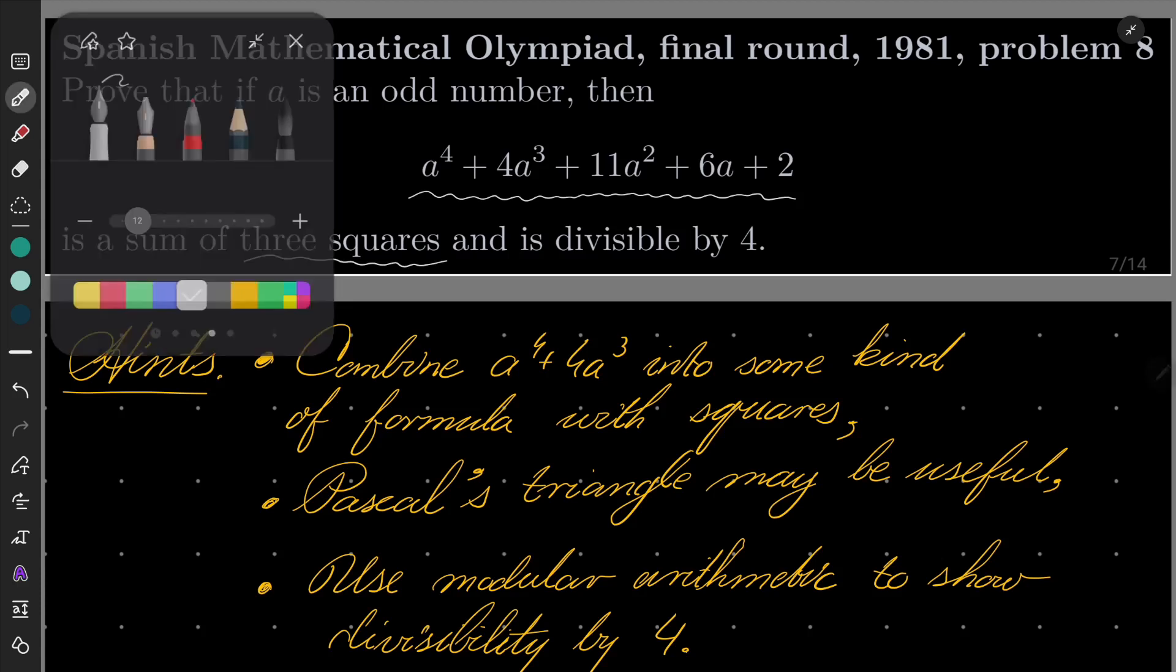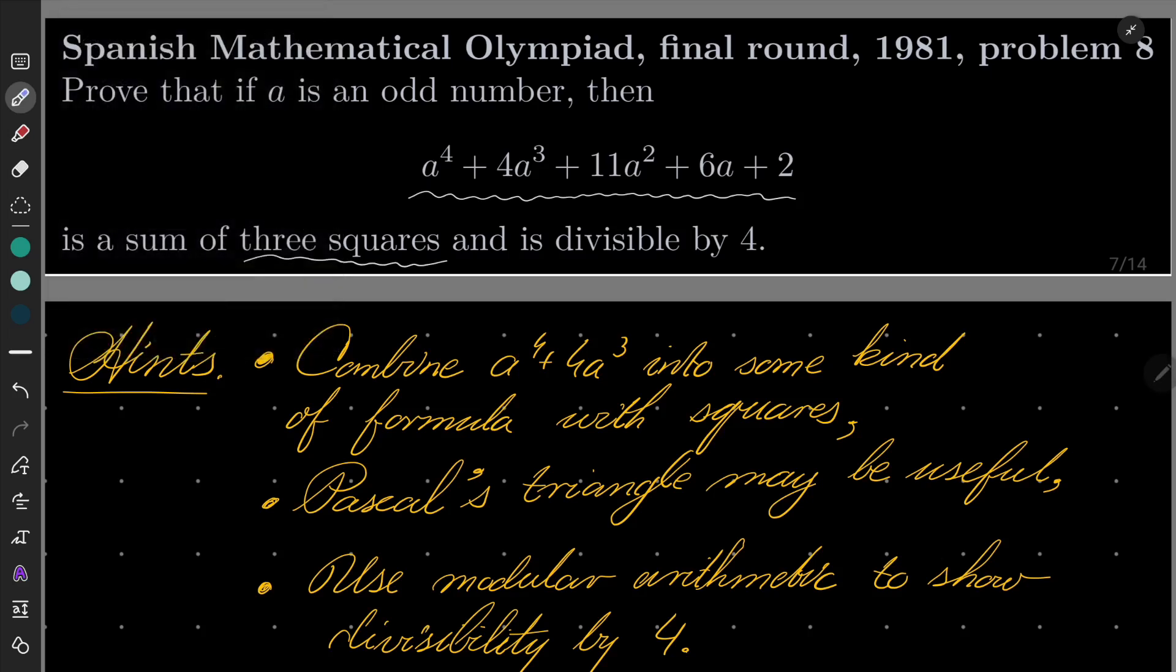So my hints for this problem. First of all, combine this part a^4 + 4a^3 into some kind of formula with squares. You may need to write something in addition to these two terms to combine it in a square of something. Also, a glance at Pascal's triangle may be helpful.